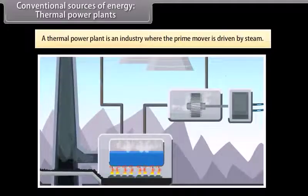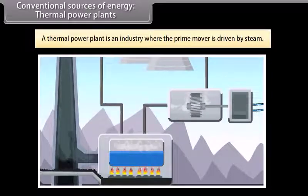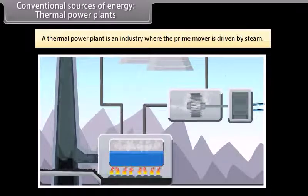Conventional sources of energy: Thermal power plants. A thermal power plant is an industry where energy is generated by steam. Here, water is heated and then it is turned into steam. This in turn spins a steam turbine driving an electrical generator. After it passes through the turbine, the steam is condensed in a condenser and recycled to where it was heated.